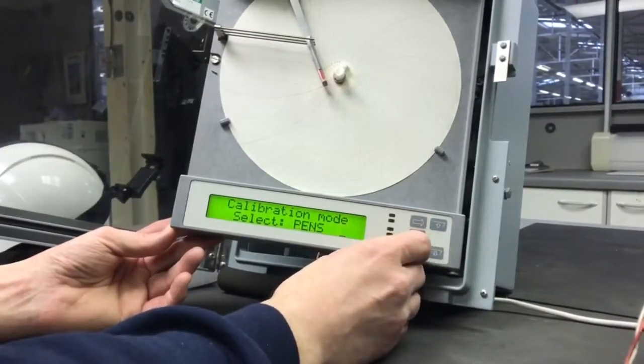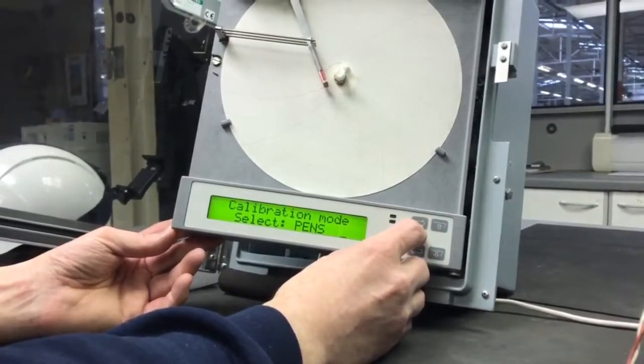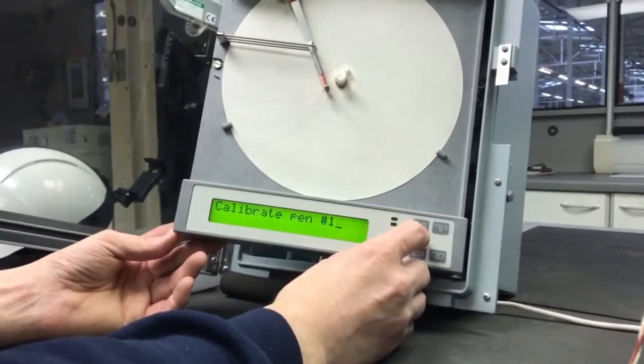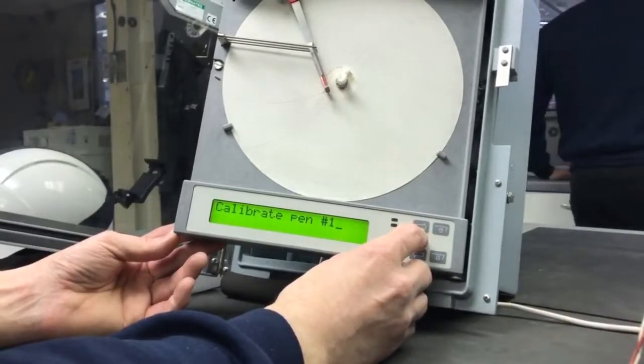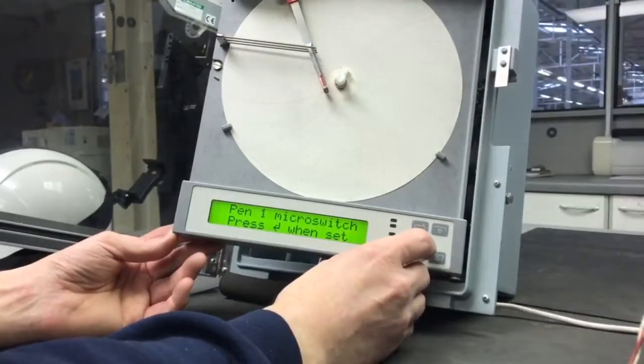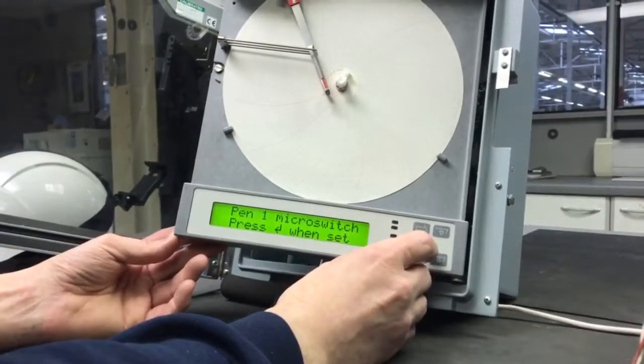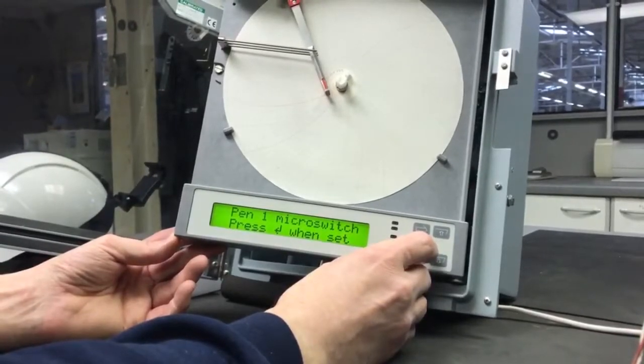Then we will go for the pen calibration. Press enter, select pen 1. The pen drives now approximately one division below the bottom of the chart.